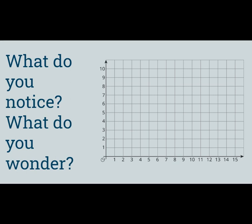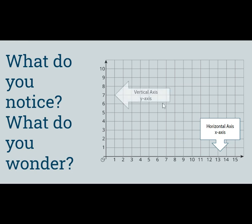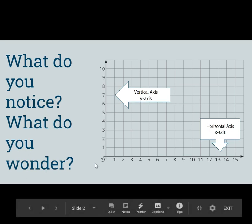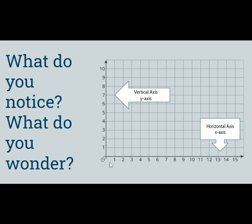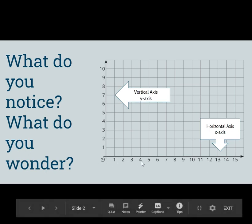Did you notice that there are no labels on the axes? How should we label the axes? The axes should be labeled with the standard x and y variables. The horizontal axis is the x-axis and the vertical axis is the y-axis. You may have also noticed that the scale for the coordinates is 1 along the x-axis and along the y-axis.